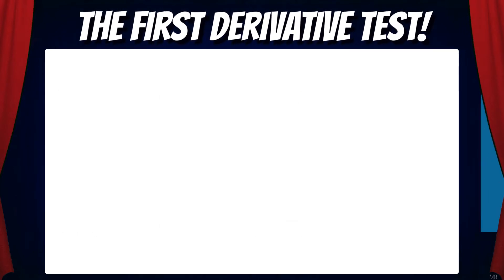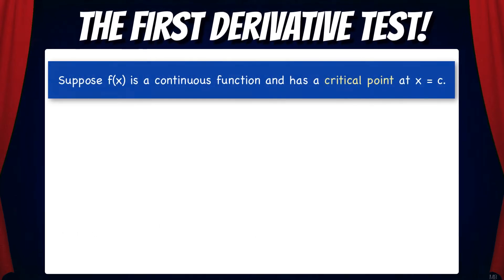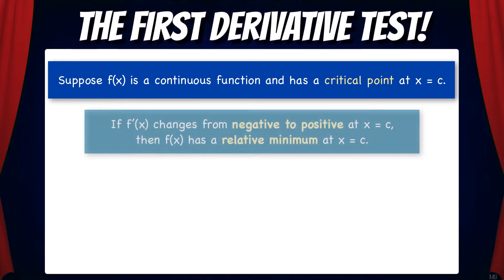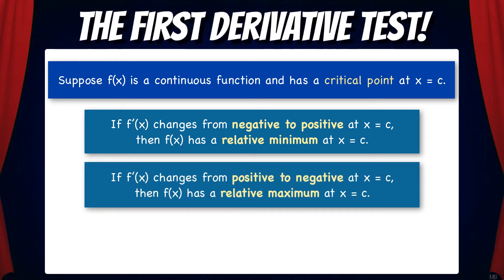Here's what it says. Suppose f is a continuous function and has a critical point at x equals c. If f' changes from negative to positive at x equals c, then f has a relative minimum at x equals c. And if f' changes from positive to negative at x equals c, then f has a relative maximum at x equals c.